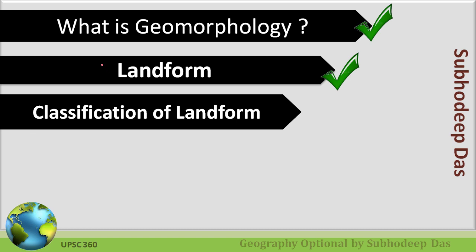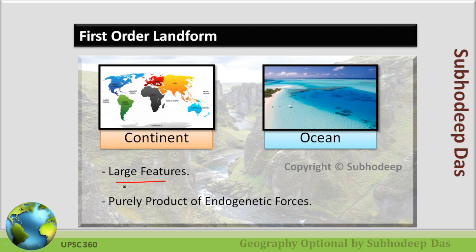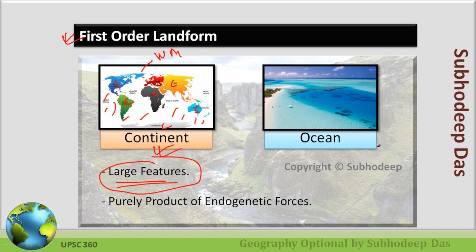For this class, we have delved into what is geomorphology, what are landforms, and now we will see the classification of landforms. Salisbury, who was a geographer, classified landforms on various magnitudes — into first-order, second-order, and third-order landforms. First-order landform is simply the largest features which we actually observe on the world map. What are the largest features? Either the continents or the water bodies — seven continents and the oceans.